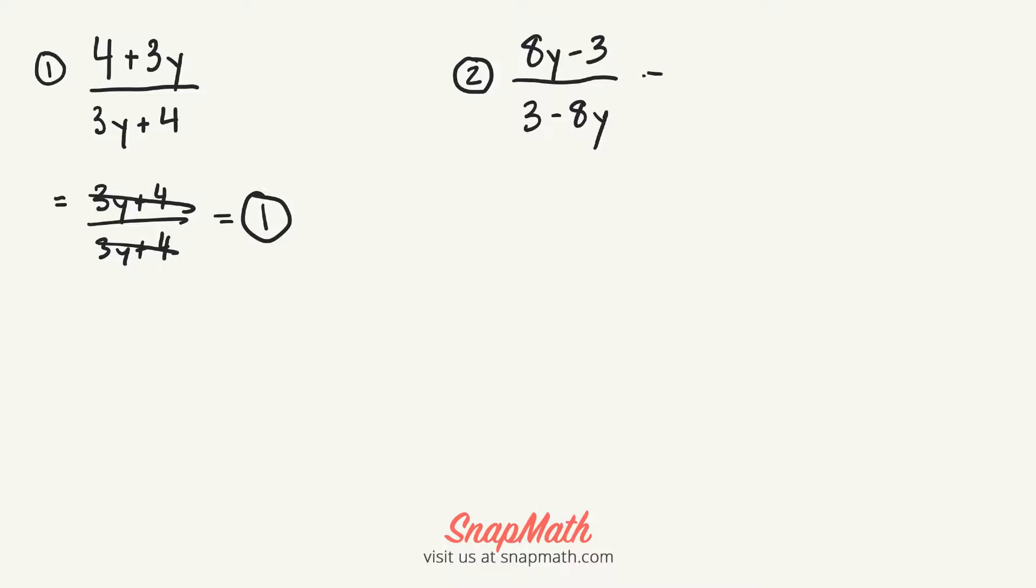So what I'm going to do is I'm going to switch the bottom order, but that negative 8y is going to stay negative 8y and it'll be plus 3. Now these obviously aren't the same, so you can't cross them out. But what we can do on the bottom is we can factor out a negative.